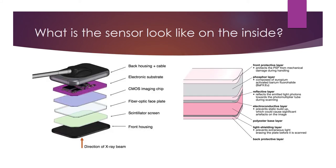Looking at the internal structure: a CMOS or CCD sensor has multiple layers — back housing and cable, an electronic substrate, an imaging chip, a fiber optic face, a scintillating screen, and a front housing where x-rays strike the sensor. A PSP sensor, on the other hand, has a front layer, phosphor layer, reflective layer, electroconductive layer, a polyester base, light shielding, and a back protective layer.